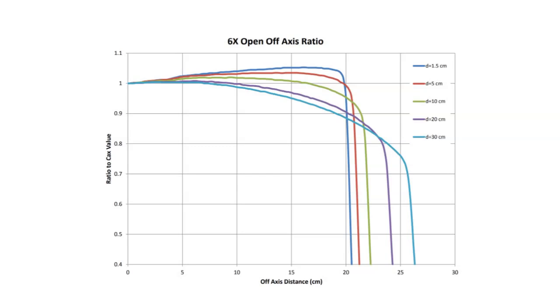And notice the y-axis of these plots here. It's the ratio to the central axis value. So this plot is directly giving you the off-axis ratio. So all you would need to do to get an off-axis ratio from this profile is find your off-axis distance, go up and find the curve with the correct depth, and wherever your off-axis distance intersects the curve, that would be your off-axis ratio.